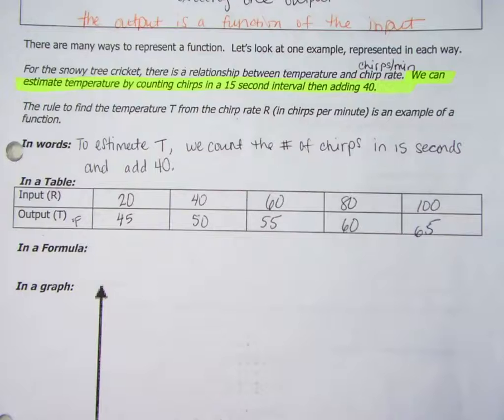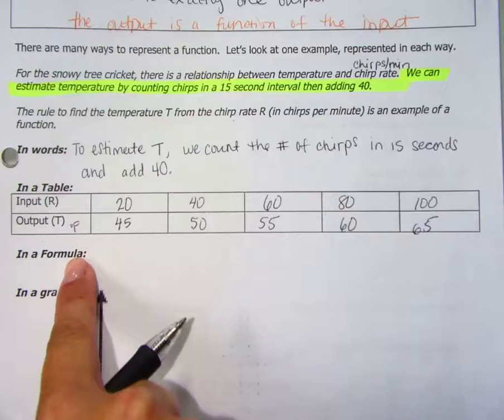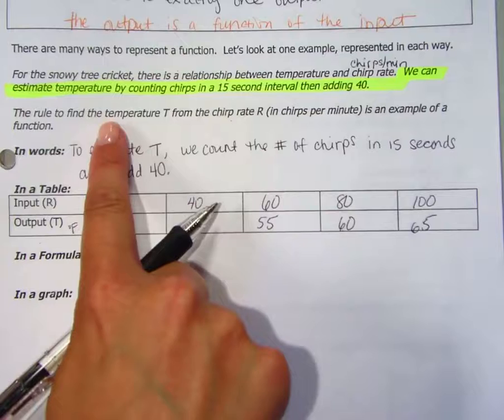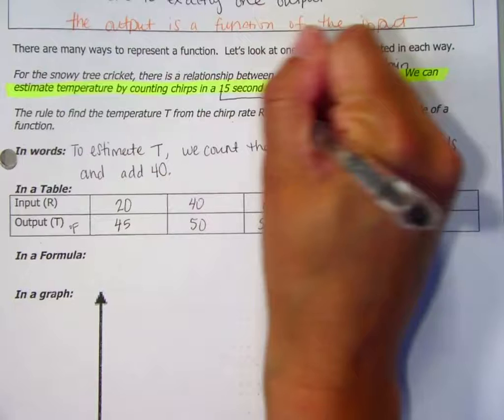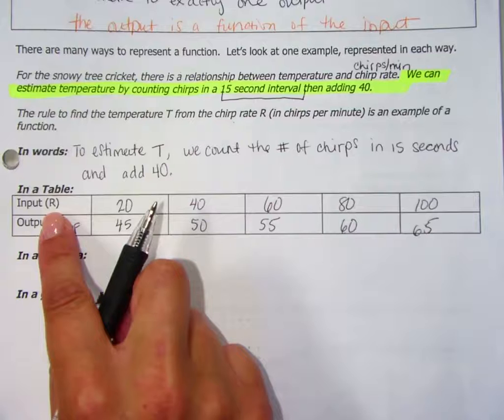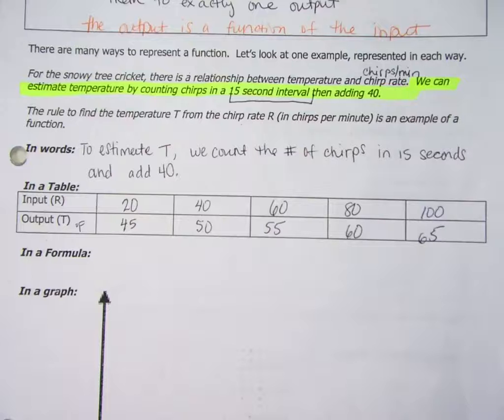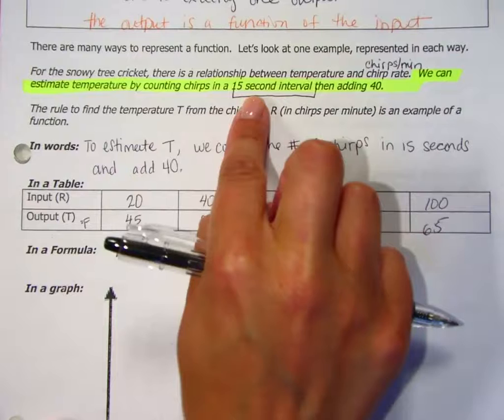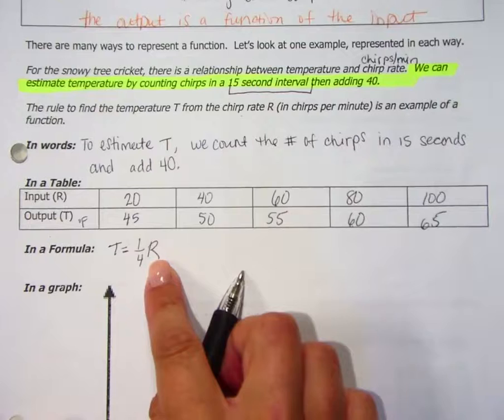That's a good question. The input is actually the chirps per minute. So when we write the formula, that 15 second interval that we count is how much of that input. Basically 15 seconds is how much of the minute? A fourth. So when we go to write the formula for this, because what we do is count the 15 second interval, we take one fourth of the input, which is chirps per minute. That's kind of confusing, but I'm glad that you asked that question. And then we add 40.